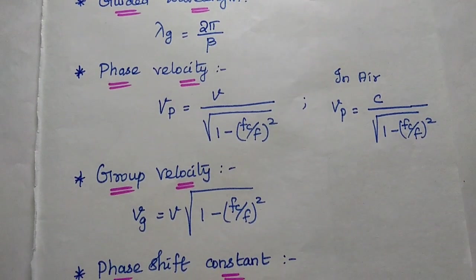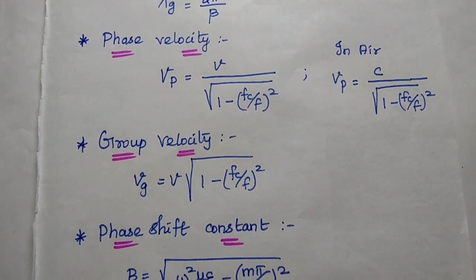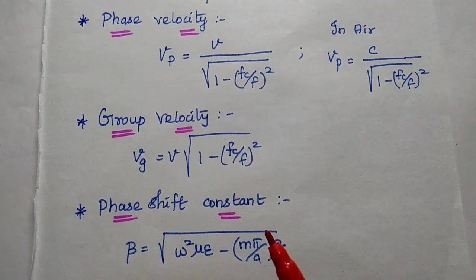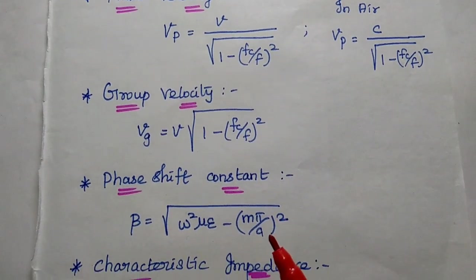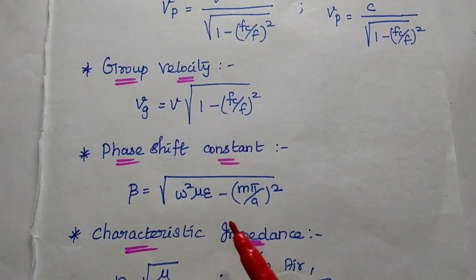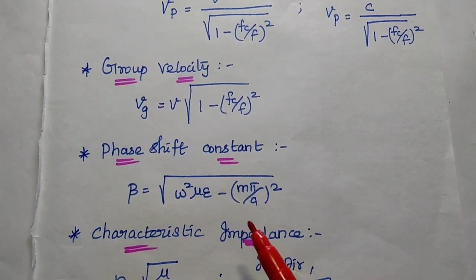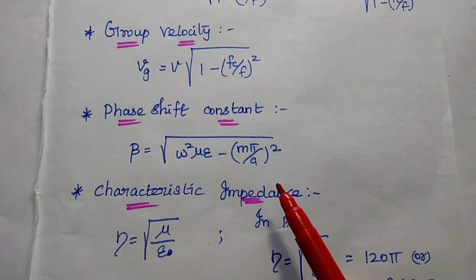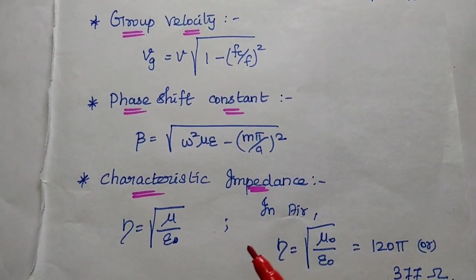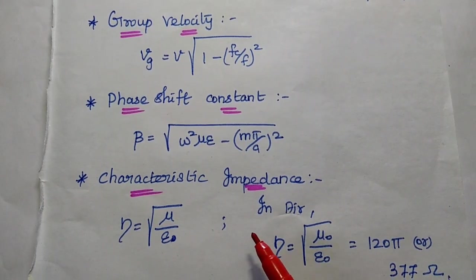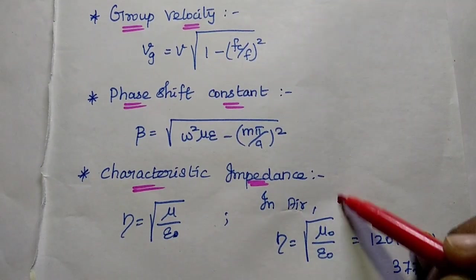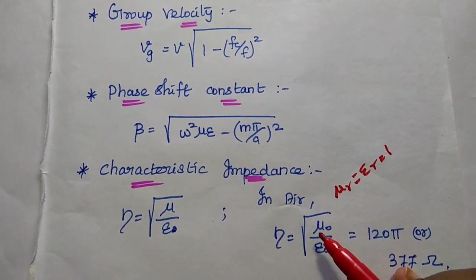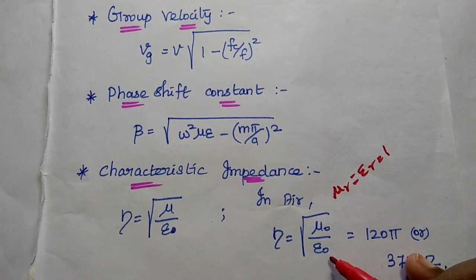The group velocity vg is equal to v into square root of 1 minus fc by f, the whole square. The phase shift constant beta is equal to square root of omega squared mu epsilon minus m by a, the whole square. The characteristic impedance eta is equal to square root of mu by epsilon; in air medium, mu r equals epsilon r equals 1, so eta equals square root of mu naught by epsilon naught.